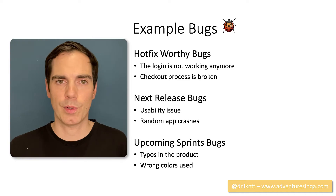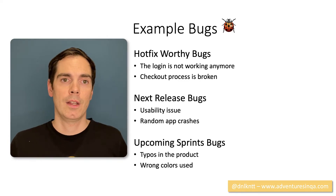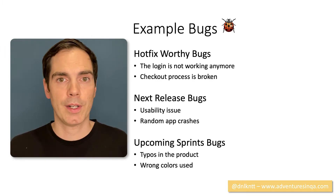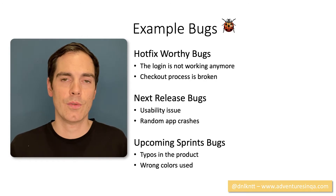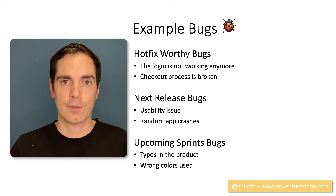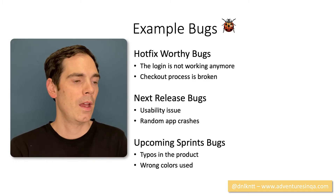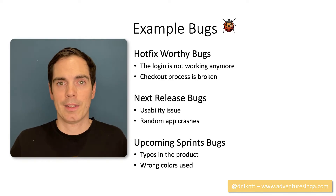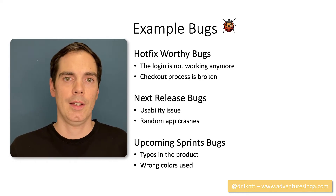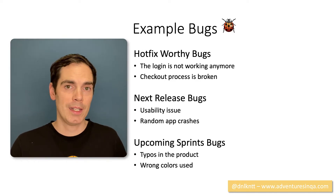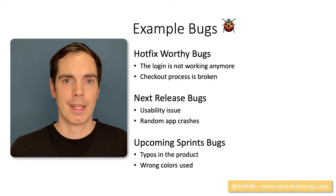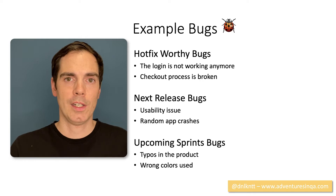What are bugs for upcoming sprints or maybe never fixed? Bugs not important for your active project work — for example, typos in the product. But again, depending on who you're talking to, typos can have a high impact — consider terms and conditions where typos might create legal issues. Or, for example, the wrong color is used — a button is blue instead of green. That's worth a look but not critical for business or users. However, if you have a high focus on accessibility, this might be a critical bug because visually impaired people may not be able to use the button. Always keep in mind who you're talking to — it completely changes the bug matrix.